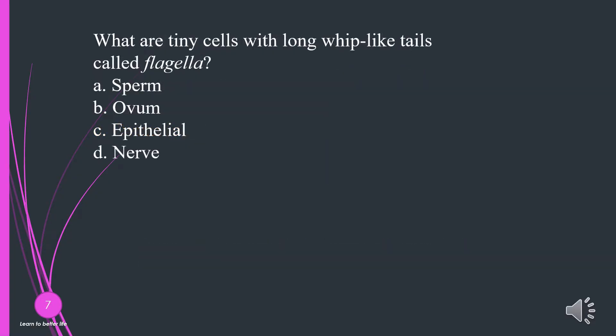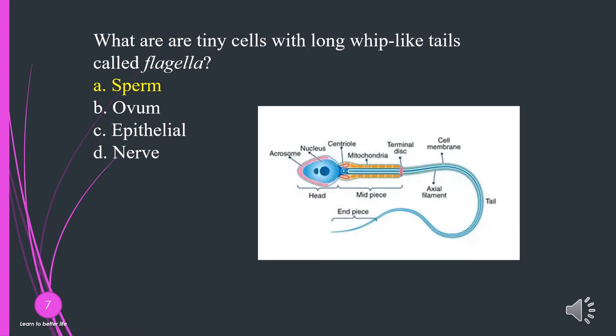What are tiny cells with long whip-like tails called flagella? A. Sperm. B. Ovum. C. Epithelial. D. Nerve. The answer is A, sperm.